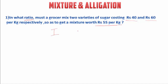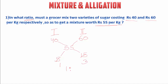We have two varieties of sugar: first is rupees 40 and other is rupees 60, and we have to get a mixture worth rupees 55 per kg. To find the ratio, we subtract 55 from 60: 60 minus 55 is 5, and subtract 40 from 55: 55 minus 40 is 15. So 5 to 15 simplifies to 1 ratio 3. That is our answer.